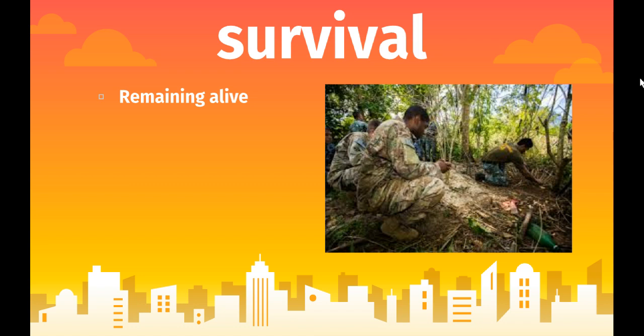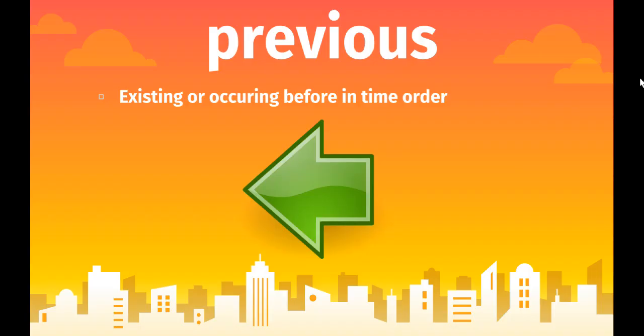It doesn't look like the easiest place to survive in. Previous means existing or occurring before in time or order. On your homework, I want you to write one of the previous teachers you have had.